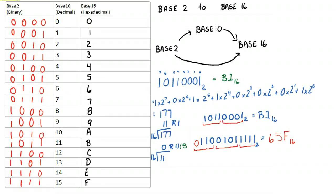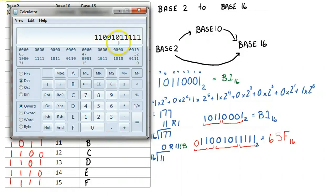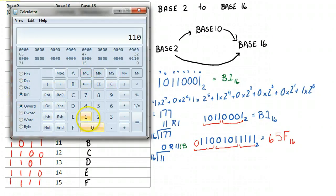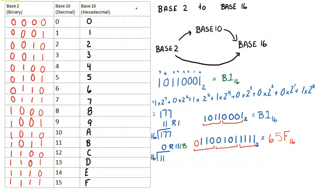Now let's pop up our calculator and do a quick check. In binary mode, we enter 1, 1, 0, 0, 1, 0, 1, 1, 1, 1, 1 — making sure the mode is set properly. We convert that to hexadecimal and we see it's 6, 5, F. That's a really useful shortcut that's definitely worthwhile understanding. We'll have one more video after this that shows how to go from hexadecimal to base 2.